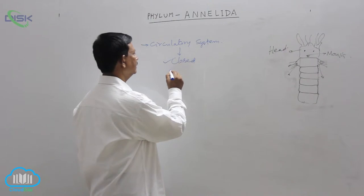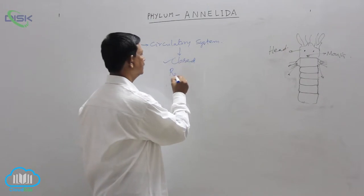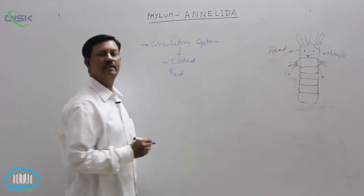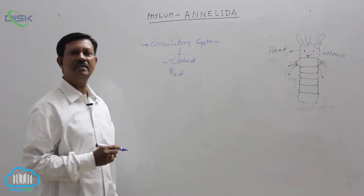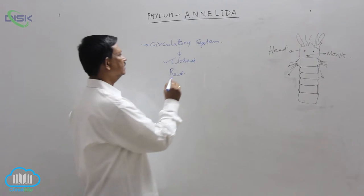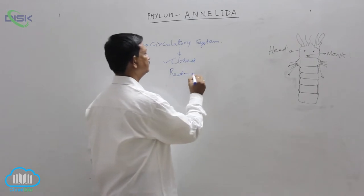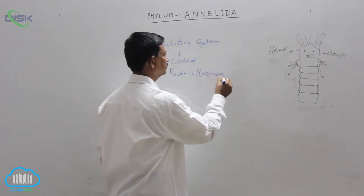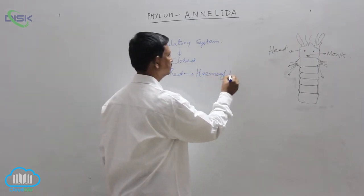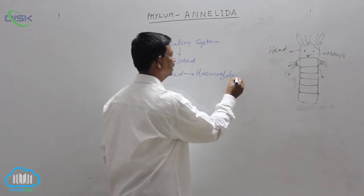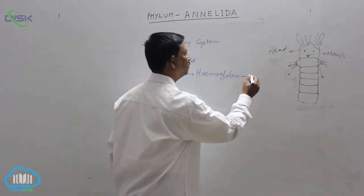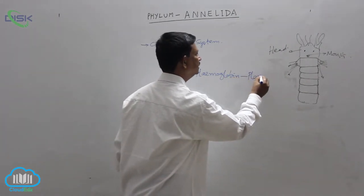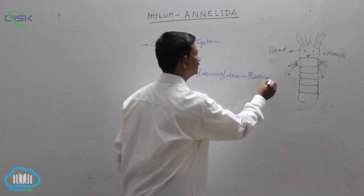Blood is red in color due to the presence of hemoglobin. Hemoglobin is present in the plasma — it is found dissolved in plasma. This is the invertebrate character.